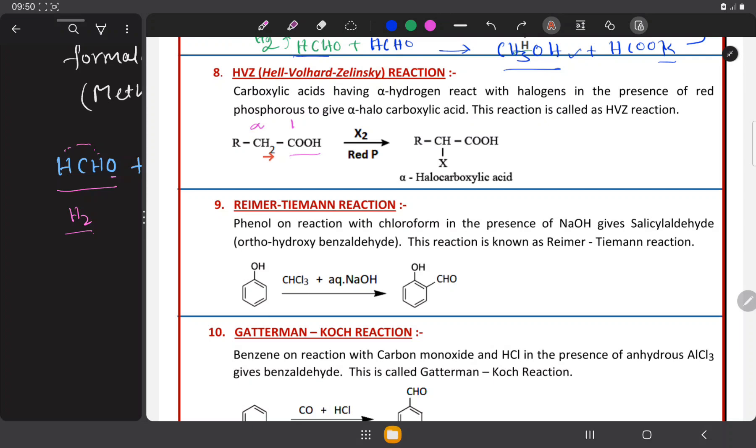That means, you remove one hydrogen from here and substitute halogen X in the place of hydrogen. Then, it becomes RCHX because one hydrogen is replaced by X. RCHX and COOH. This is the final product formed and this is called alpha halocarboxylic acid. This is a carboxylic acid and at alpha carbon, one halogen is present. So, it is called alpha halocarboxylic acid. This is a very simple statement and a simple reaction.